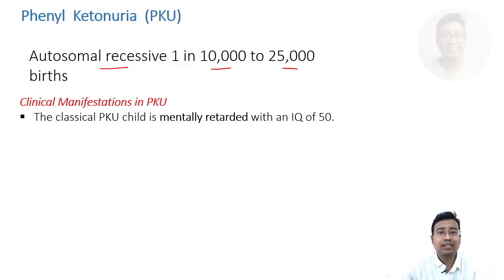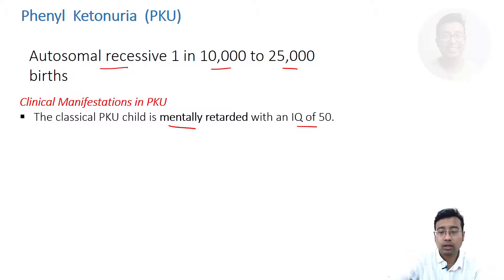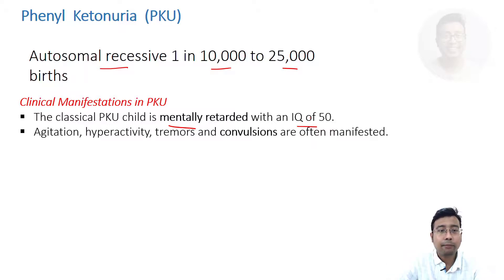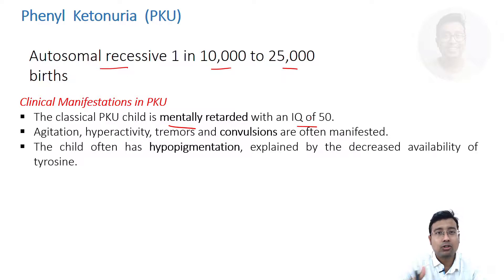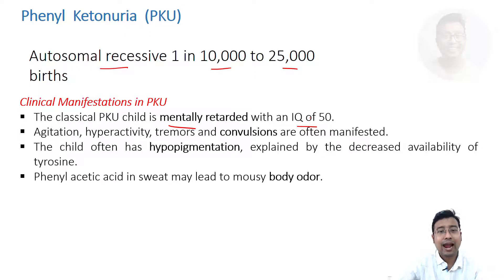Number one, the child is mentally retarded. This is the main concern and why we focus on early diagnosis of this disease. This belongs to an inborn error of metabolism. Along with agitation, hyperactivity, and tremor because of neurotransmitter disorder.